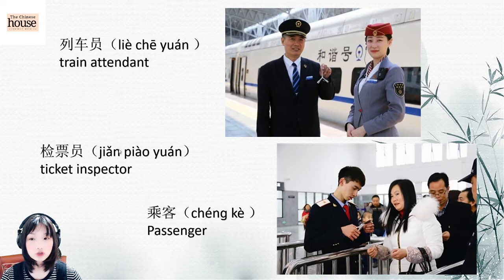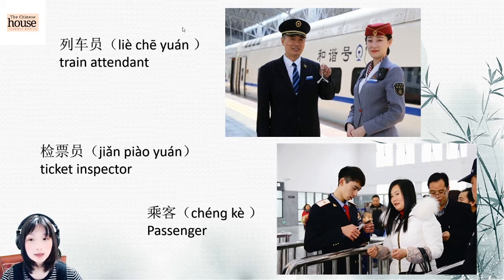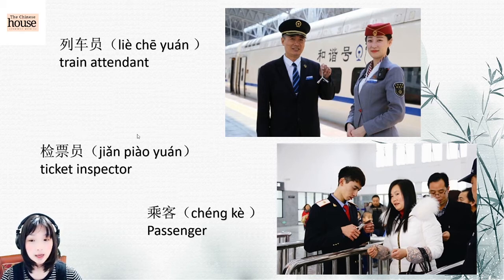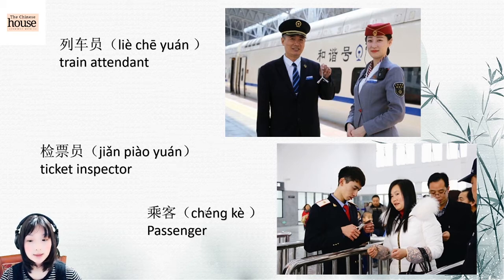And then train attendant — 乘务员 (chéng wù yuán), which means people on board. Ticket inspector: 验票员 (yàn piào yuán). 验 means check, 票 means ticket, 员 means person. Read after me. And then passenger — 旅客 (lǚ kè).